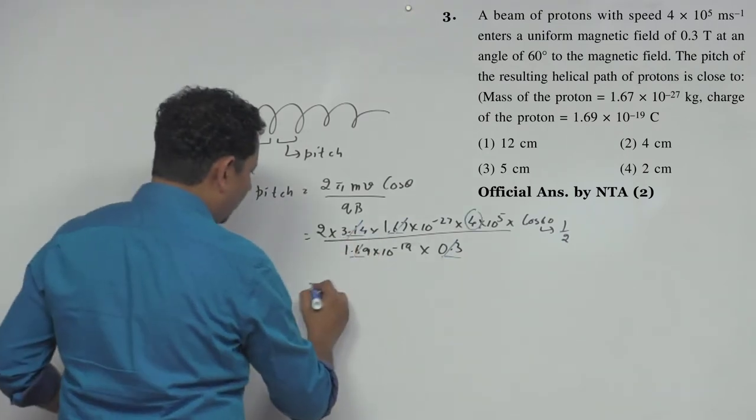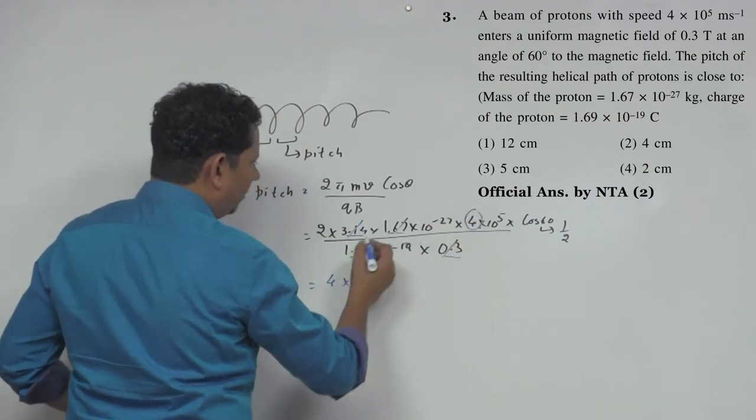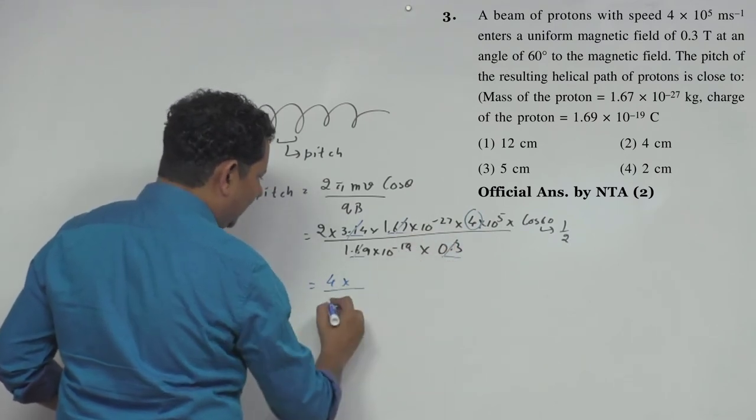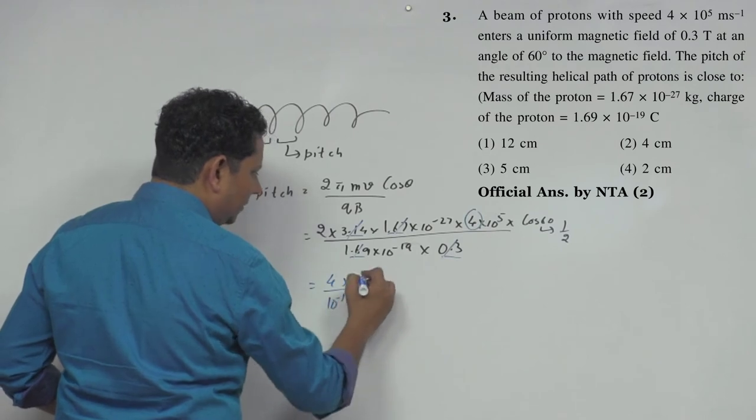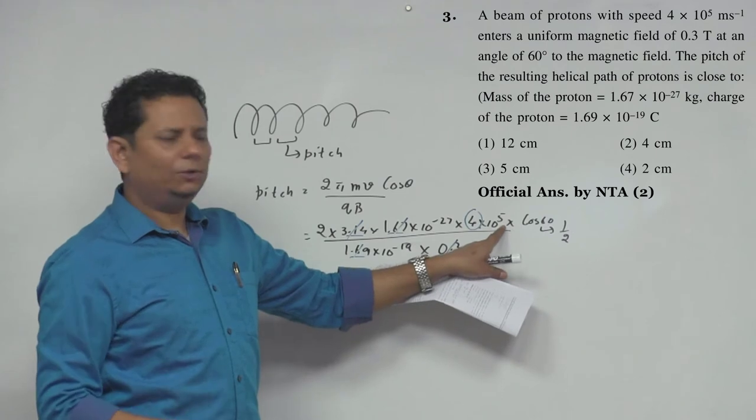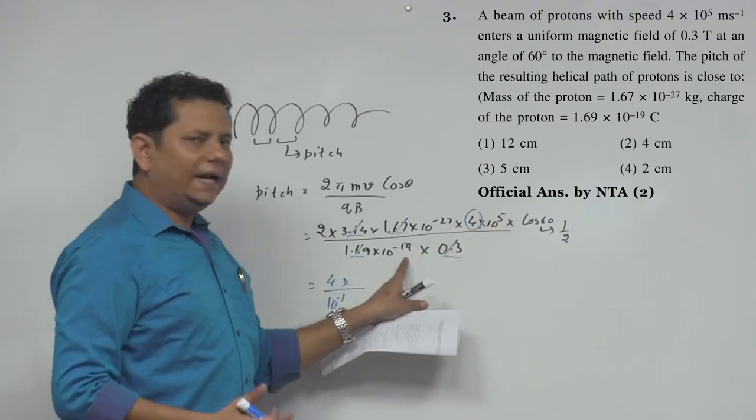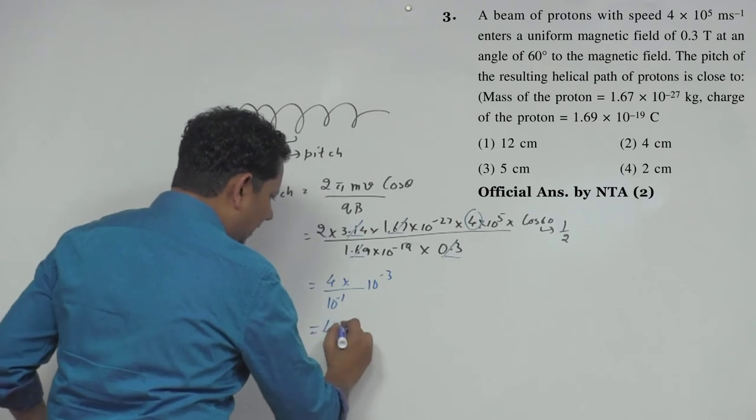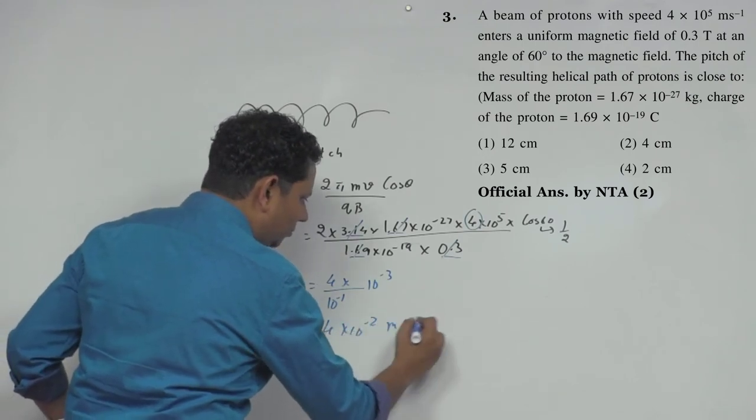The value: 4 multiplied by 0.3 is 10⁻¹, combined with 10²⁷, then 10⁵ gives 10⁻²², and 10⁻¹⁹ gives 10⁻³. So your final answer is 4×10⁻² meters.